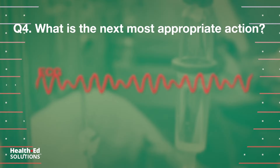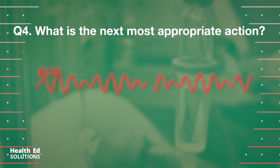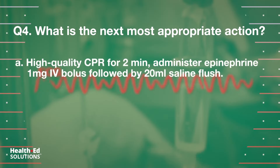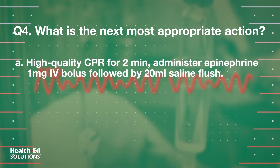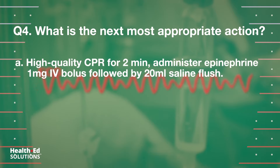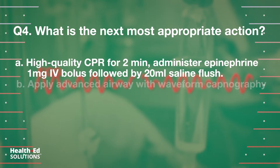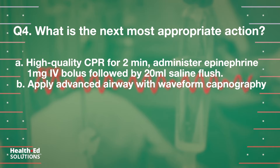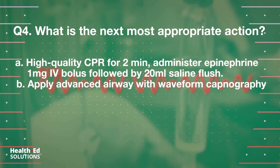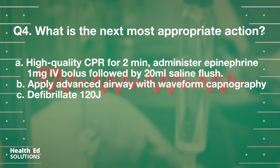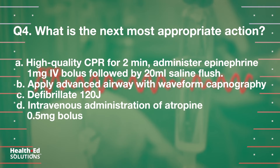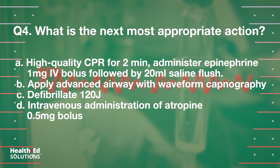Question 4: What is the next most appropriate action? A. High-quality CPR for 2 minutes; administer epinephrine 1 mg IV bolus, followed by 20 ml saline flush. B. Apply advanced airway with waveform capnography. C. Defibrillate 120 joules. D. Intravenous administration of atropine, 0.5 mg bolus.